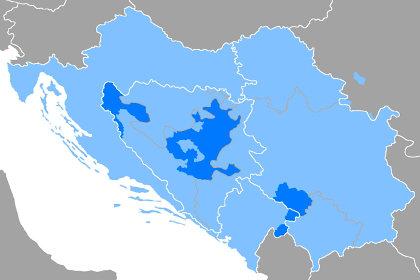The Bosnian language is the standardized variety of Serbo-Croatian mainly used by Bosniaks. Bosnian is one of three such varieties considered official languages of Bosnia and Herzegovina, along with Croatian and Serbian, and also an officially recognized minority or regional language in Serbia, Montenegro, and the Republic of Kosovo. Bosnian uses both the Latin and Cyrillic alphabets, with Latin in everyday use.